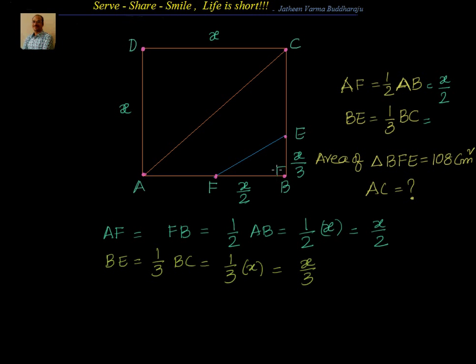And we know that triangle FBE is a right triangle. Area of triangle FBE is equal to, we know the area of a triangle is half into base into height. So that's nothing but equal to half into product of legs in right triangle. So that is half into X by 2 into X by 3. But we have been furnished the information that this area is also equal to 108.